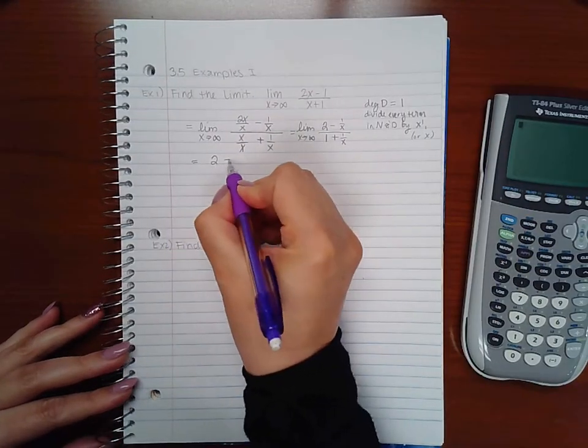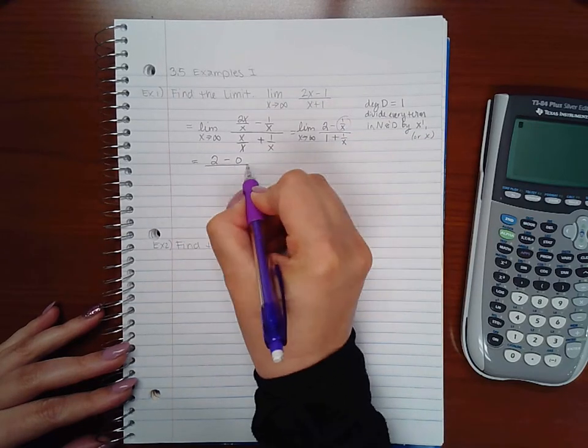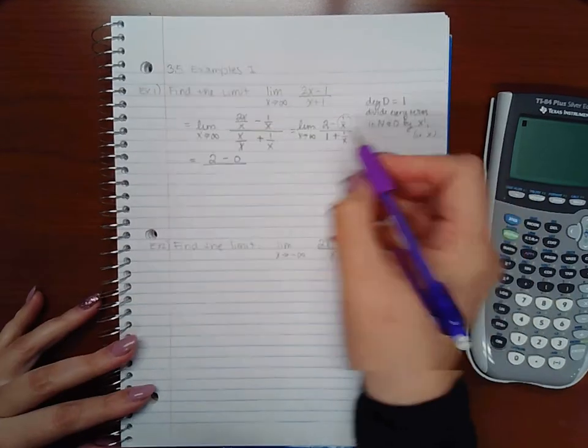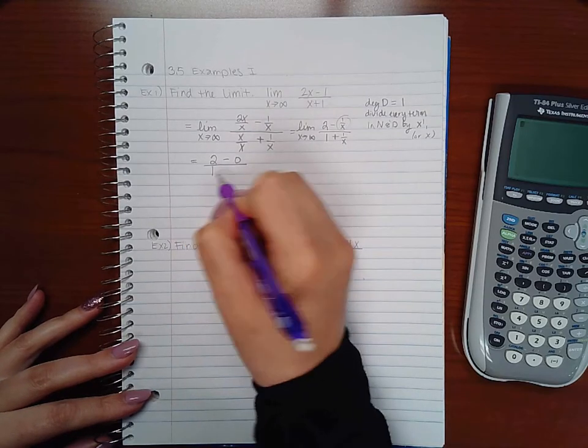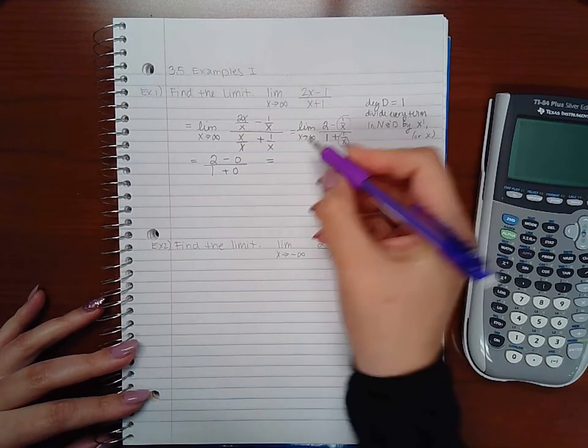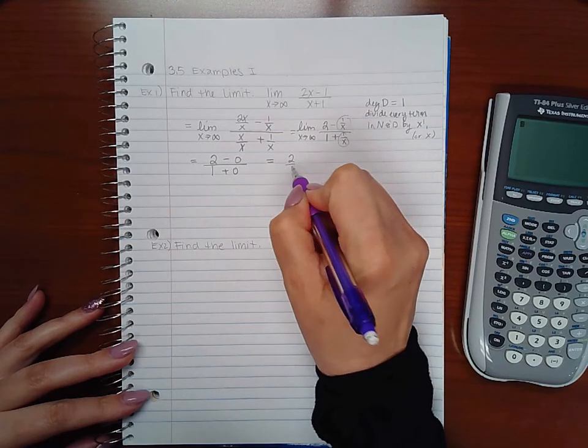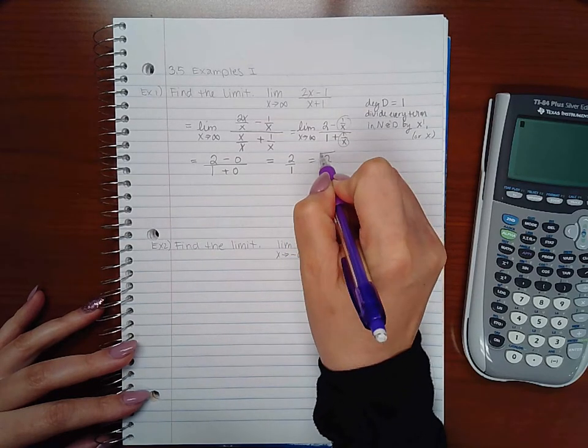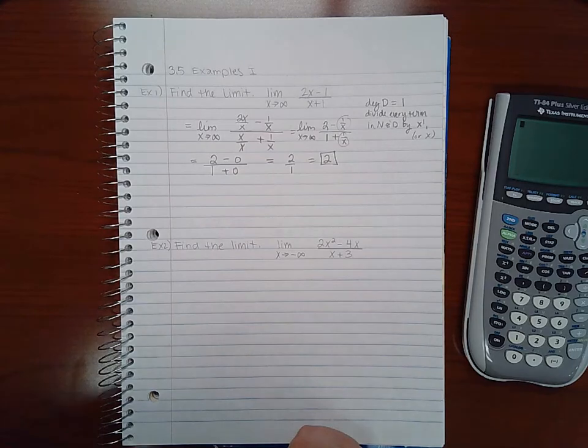2 will stay 2, but this fraction will go to 0 according to the first rule in the lecture. 1 will stay 1 and this will go to 0. Then I have 2 over 1, which is just 2. So the limit is equal to 2.